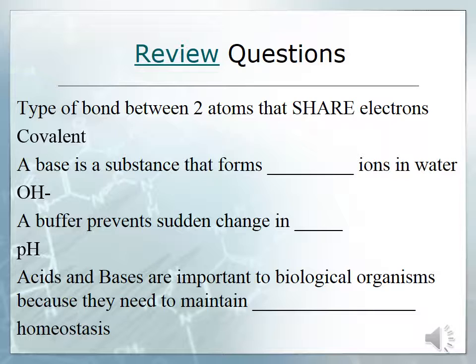Review: The type of bond formed between two atoms that share electrons is called a covalent bond. A base is a substance that forms hydroxide ions in water. A buffer prevents sudden changes in pH. Acids and bases are important to biological organisms because they need to maintain homeostasis.